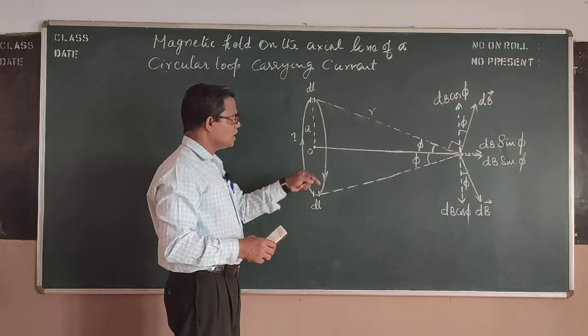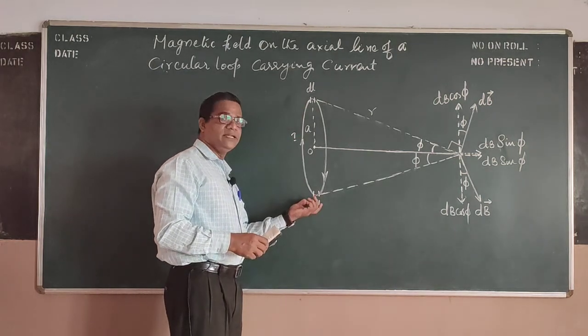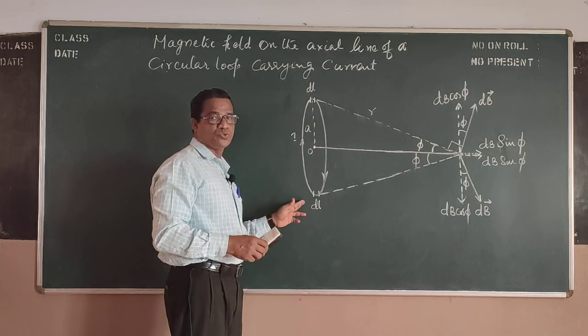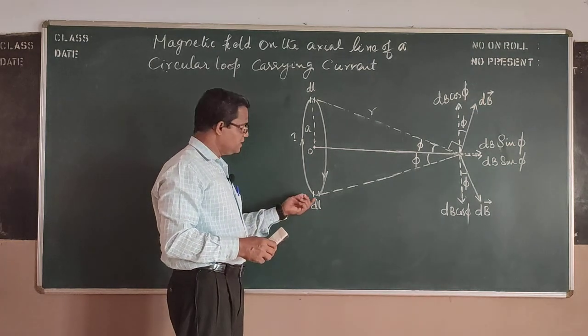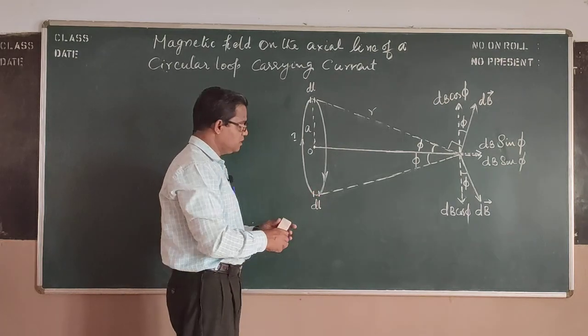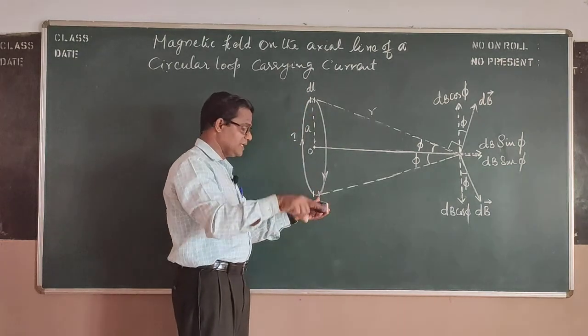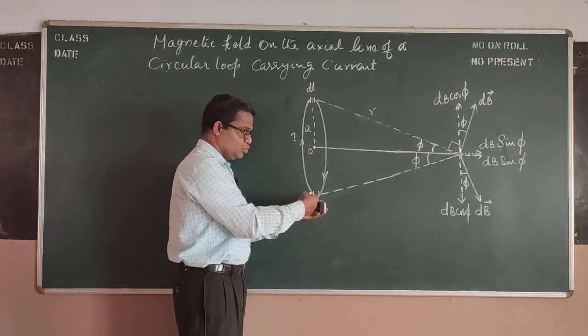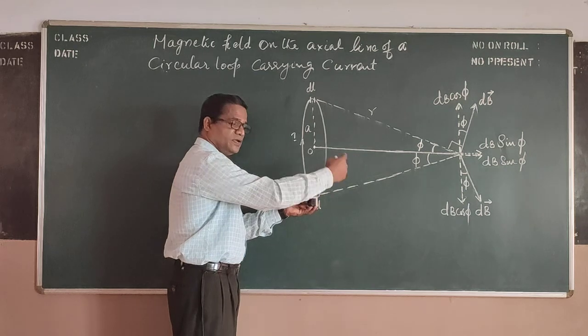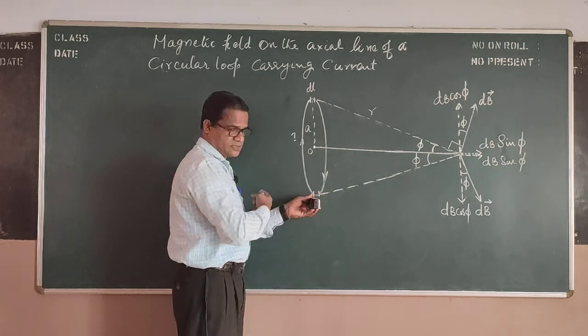Now being a circular loop, I consider another length element, just diametrically opposite to the first one. So when I take the length element here, this carries current as it goes like this, going into the plane, so I apply thumb rule like this and there will be a field around this.